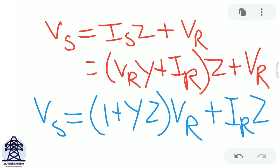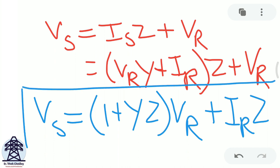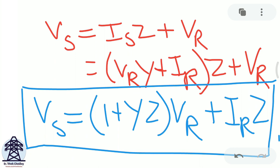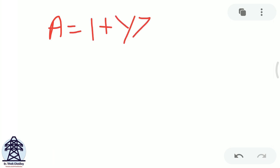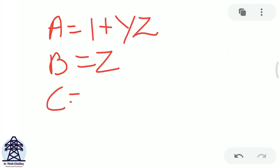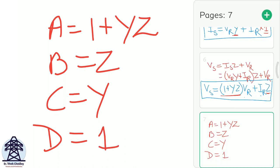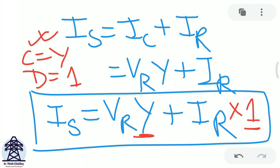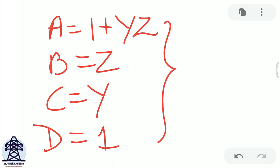Comparing VS = (1 + YZ)·VR + Z·IR with VS = A·VR + B·IR, we identify A = 1 + YZ and B = Z. So the four ABCD parameters are: A = 1 + YZ, B = Z, C = Y, D = 1. The Ferranti effect is specifically related to parameter A. Let us see how.